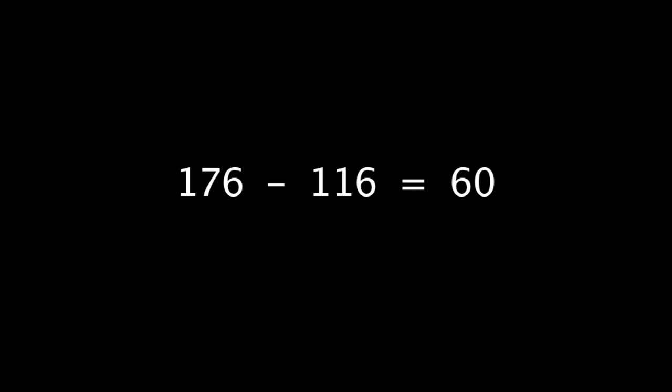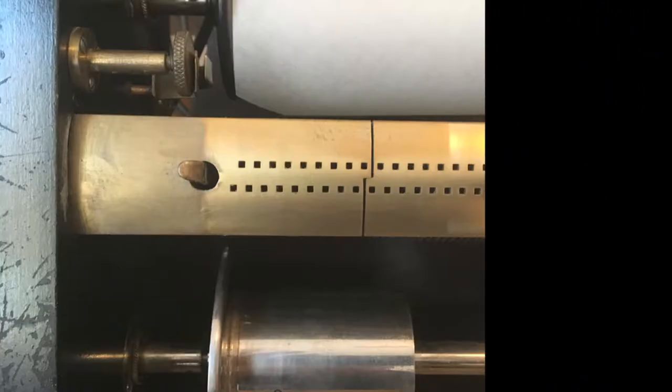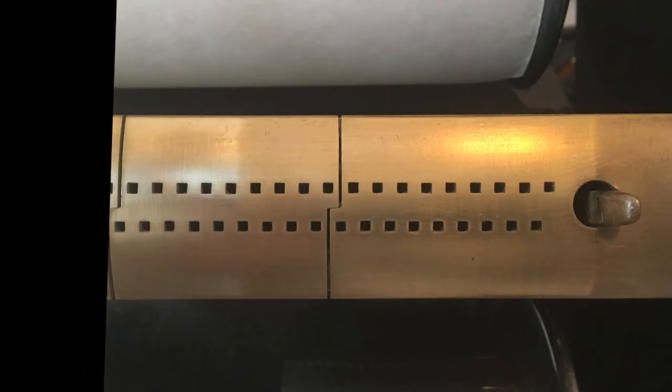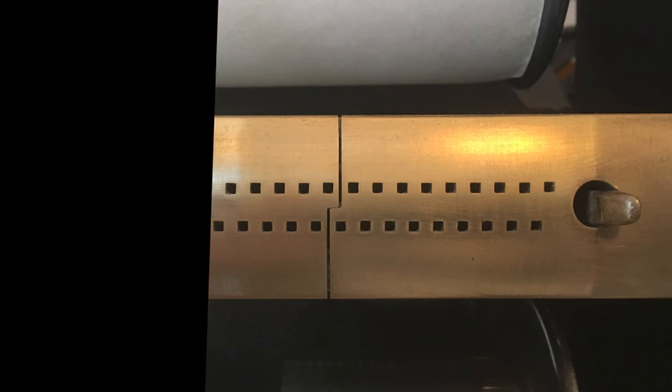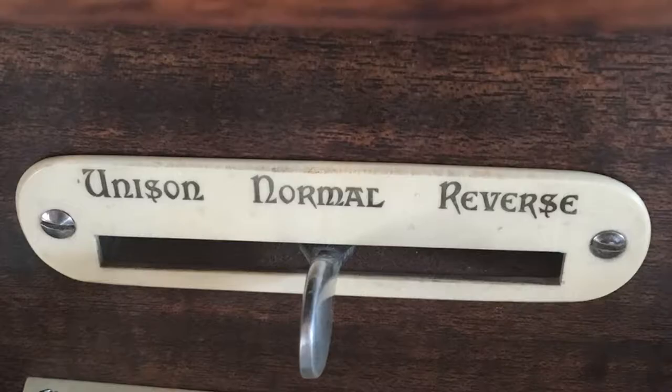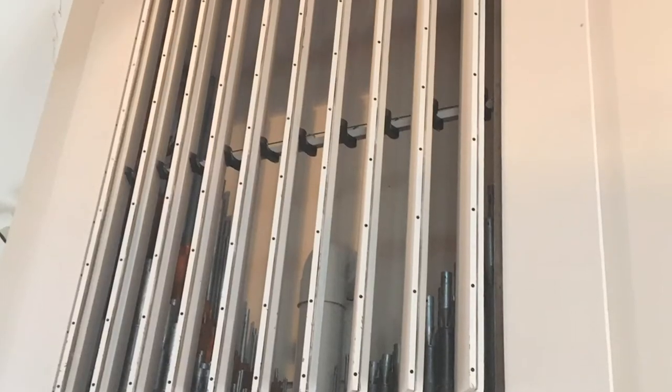Since the tracker bar has 176 holes and only 116 are used to play notes, 60 holes remain for other functions. 32 on the left and 28 on the right. These 60 holes control functions such as stops, couplers, and expression shutters.